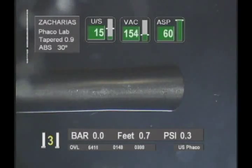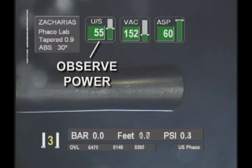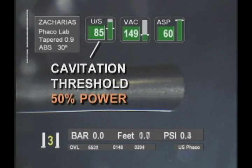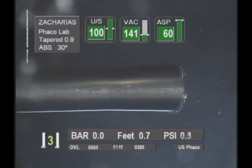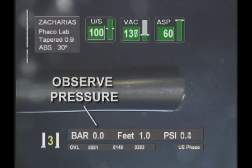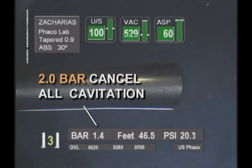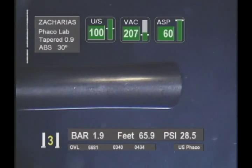Cavitation did not contribute to any increase in cutting efficiency. We have demonstrated that cavitation is present at the tip of phaco probes only when ultrasonic power is high enough, typically above 50% power. Inspired by submarine hydrothermal vents, we used hyperbaric conditions to totally cancel cavitation at the tip of the phaco probe, both when freely exposed to water and in close proximity to solid bodies similar to cataract fragments.